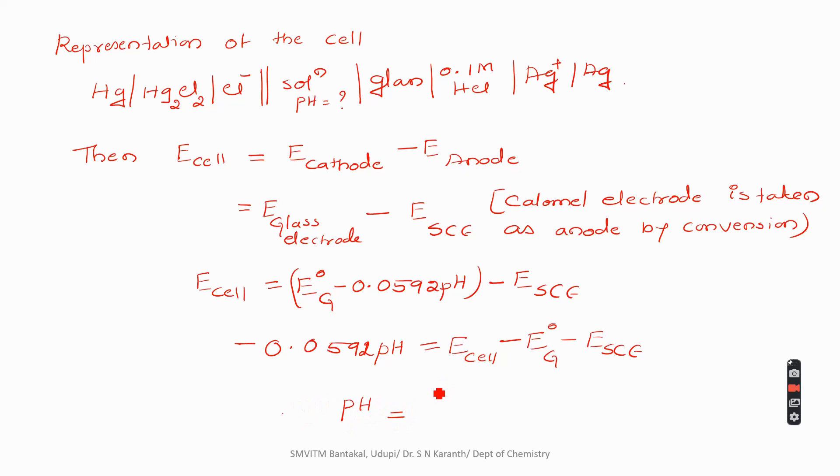That is why I can write pH equal to E naught G minus E cell minus standard calomel electrode, divided by 0.0592.